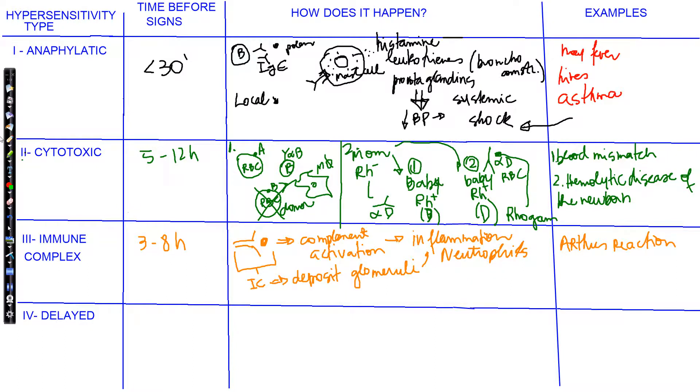The delayed type, or type 4, takes around 24 to 48 hours for you to see signs. That's why it's called delayed. What happens here? One typical example, it could happen to latex, to metals, but one very typical and classic example is the poison ivy reaction. What happens is that you have the plant. This is the poison ivy. It's three leaves. And the poison ivy will touch your skin, and there is a component of your skin that combines with a component of the plant. When these two things combine,